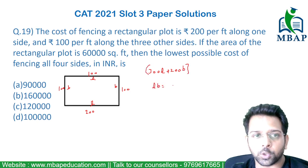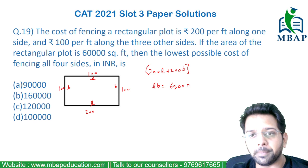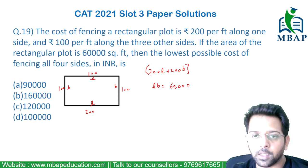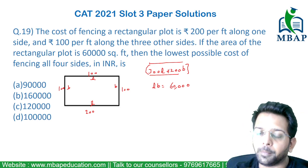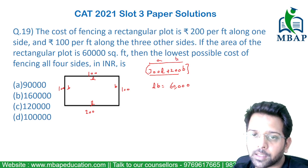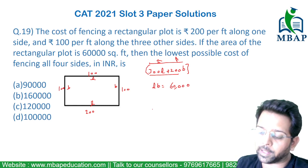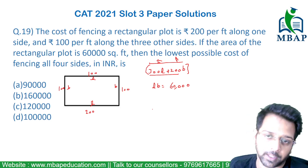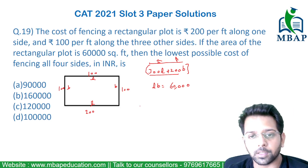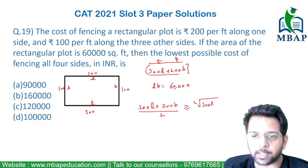My area, which is L into B, has been given to me as 60,000 square feet. Now, the question is: find the minimum possible cost of fencing the four sides, which is the minimum cost of 300L plus 200B. Let's assume A is 300L and B is 200B. We know the arithmetic mean of two values is more than or equal to the geometric mean, which means (300L + 200B) divided by 2 is more than or equal to the square root of 300L into 200B.